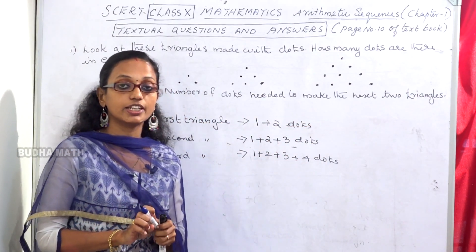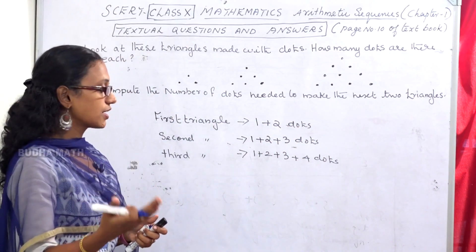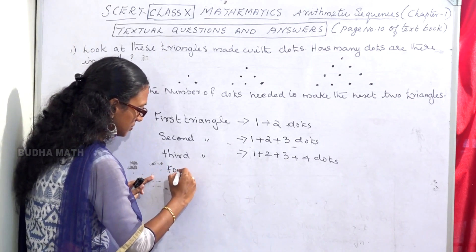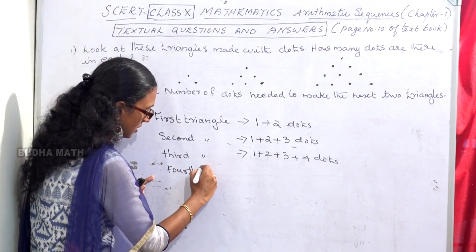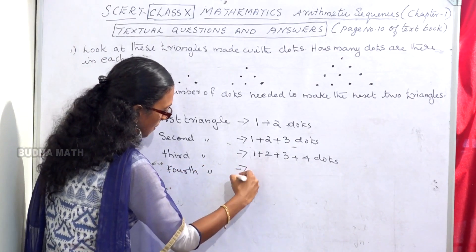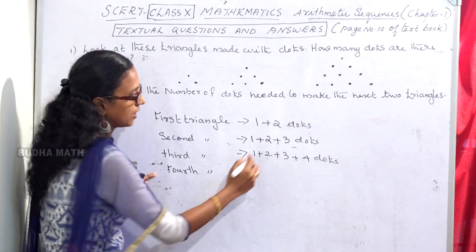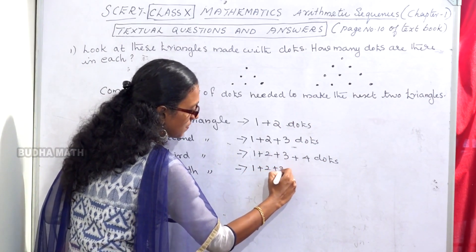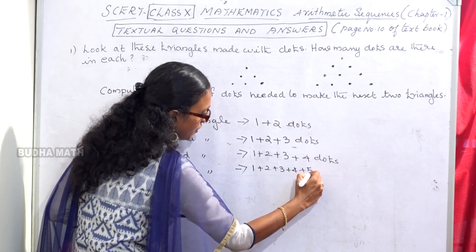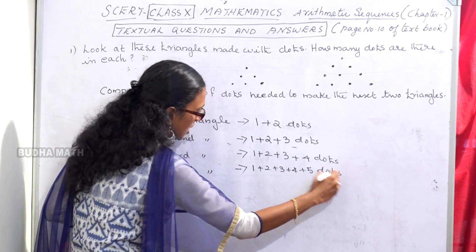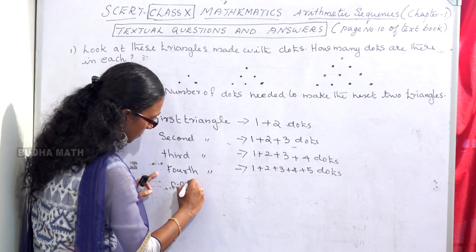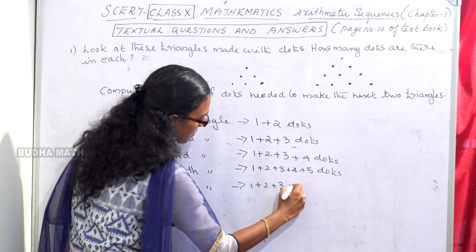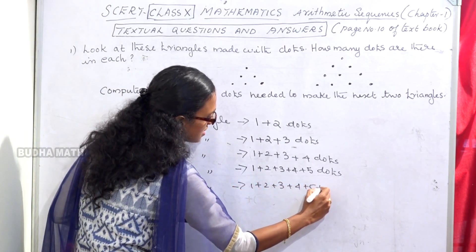We need to make 2 more triangles. The 4th triangle: 1 plus 2 plus 3 plus 4 plus 5 dots. The 5th triangle: 1 plus 2 plus 3 plus 4 plus 5 plus 6 dots.